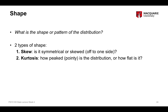The second aspect of shape is something called kurtosis, which represents how peaked or pointy the distribution is compared to how flat and unpeaked it is.